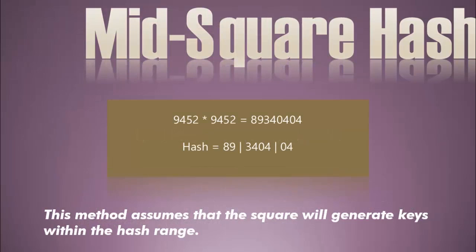The mid square hash takes the value of the key that we want to hash, squares it, extracts the middle of the result, and takes that as our hash number. If it's too big, we can always mod it by the size of the table.